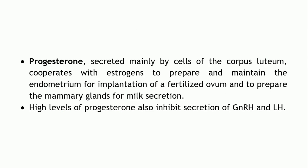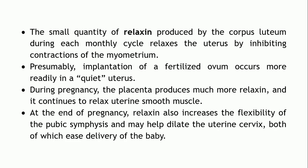The next hormone is progesterone, secreted mainly by the cells of the corpus luteum. Along with estrogen, progesterone prepares and maintains the endometrium for implantation. It is mainly responsible for the proliferation of the stratum functionalis, increasing endometrial thickness to prepare for implantation of the fertilized ovum. It also prepares the mammary glands for milk secretion. High levels of progesterone inhibit the secretion of GnRH as well as LH.